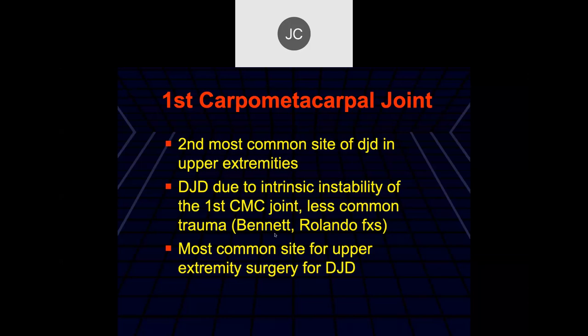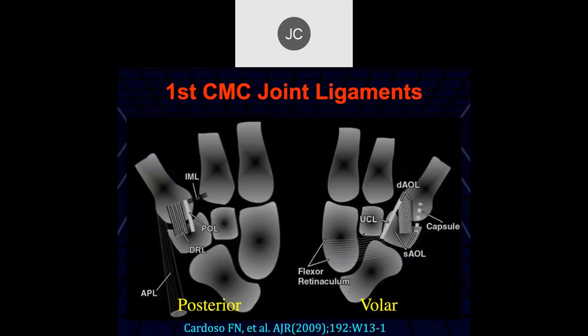It's also a common location for fractures — we'll talk about the Bennett and Rolando fractures. Here's a diagram posteriorly: we have the posterior oblique ligament and the capsular ligaments, the intermetatarsal ligament here, and then the tendon insertion to the base of the first metacarpal. On the volar side we have the flexor retinaculum anteriorly.